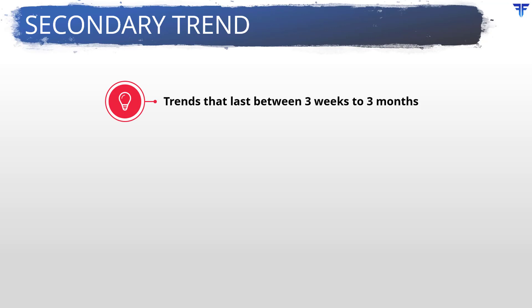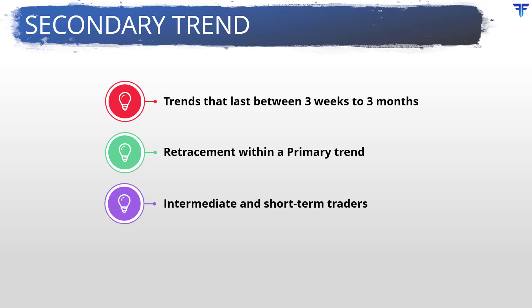Secondary trend, which is also known as an intermediate trend, is a trend that usually lasts between three weeks to three months, but can sometimes even extend to as high as six months or more. A secondary trend is a retracement to the primary trend — in other words, secondary trends are price corrections within a bull market or price recoveries within a bear market. When you hear people say bear market rallies or bull market corrections, they are usually referring to the secondary trend. These trends are more suited to intermediate and short-term traders and can be identified on the daily timeframe. Monitoring secondary trends is important even if you are a long-term trader, because they provide clues about the health of the primary trend as well as indicate reversals in the primary trend.